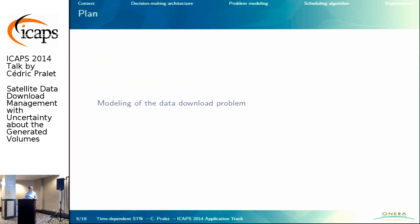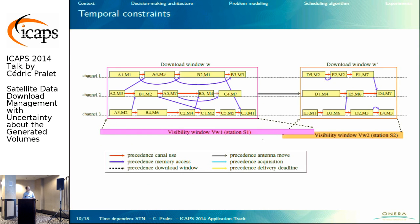Let's focus on the data download problem. Here is an example of a download plan where the basic activities are file downloads. In this scenario we have five acquisitions — A, B, C, D, E — and each acquisition generates a certain number of files recorded on board. For example, one activity corresponds to downloading the first file of acquisition A stored on memory bank M1, another to the fourth file of acquisition A stored on memory bank M3, and so on.